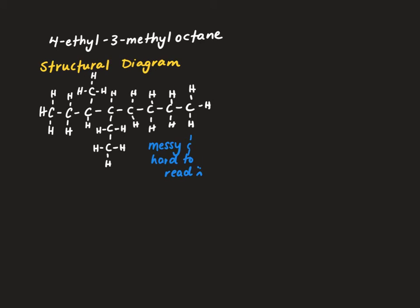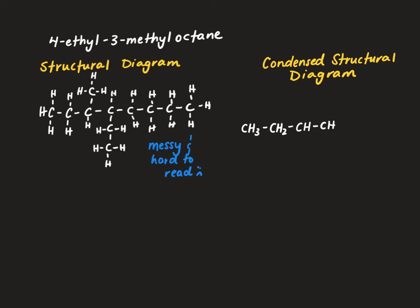We're going to use two different types of condensed structural diagrams to more cleanly represent this structure. The first is going to be just like what we did in the last slide. We start with CH3 and draw the backbone first — then CH2, then two CH groups (these have one fewer hydrogen because they have a carbon attached), followed by three CH2s. Attached to the backbone I'm going to have two branches: at carbon three a CH3, and at carbon four a CH2 and a CH3.